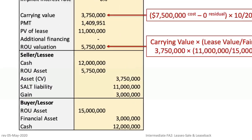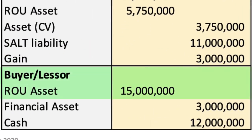Finally, we prepare the journal entry for the lessor (buyer of the building). Simply debit a ROU asset account for the $15,000,000 fair value, credit cash for the $12,000,000 cash paid, and credit the difference of $3,000,000 to a financial asset account.